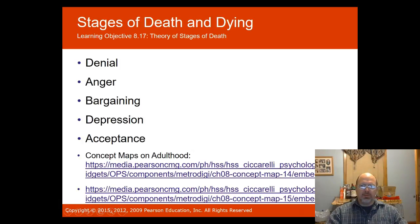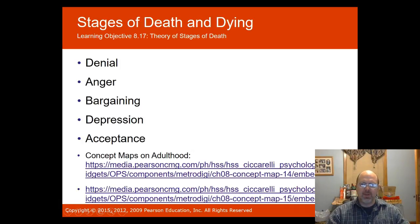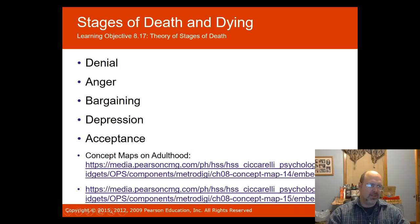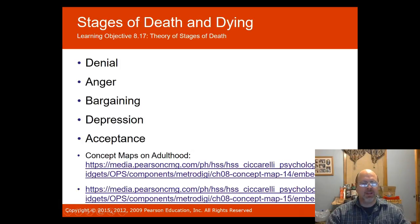Elizabeth Kübler-Ross described the stages of grief, with her latest research from 1997. Most people facing death go through: denial or shock, then anger, then bargaining, then depression, then acceptance. A criticism of this stage theory is that each person's dying process is unique — there is really no right or wrong way to go through death, but these are common stages that many people experience.